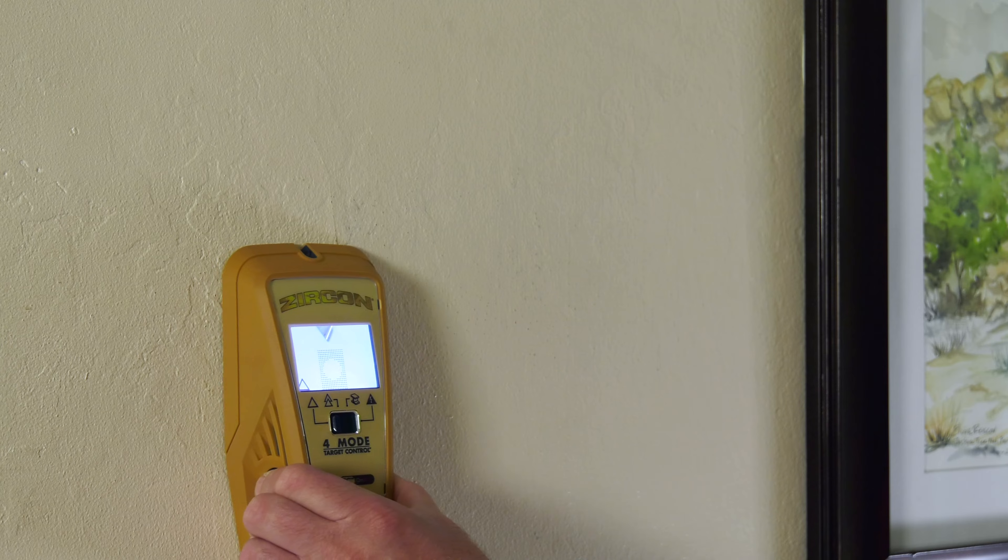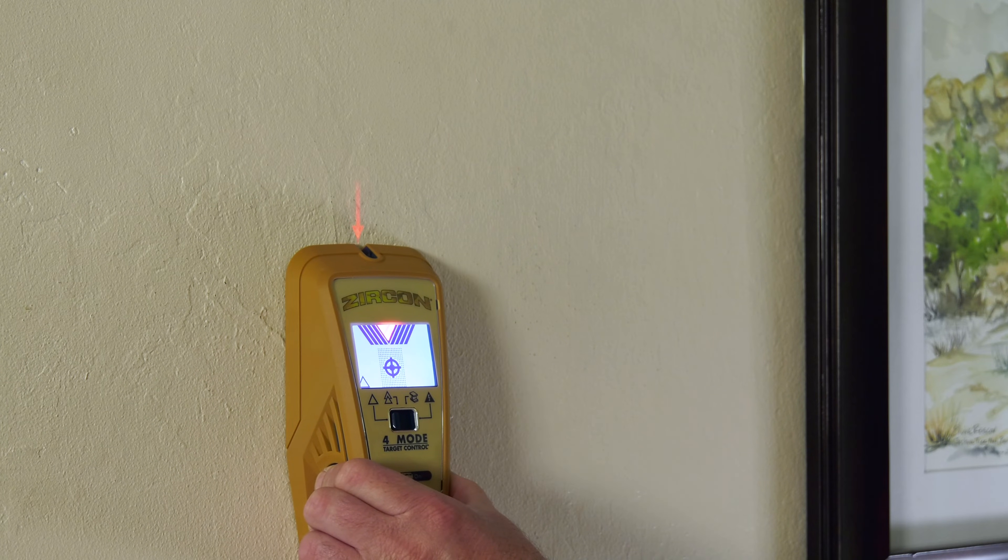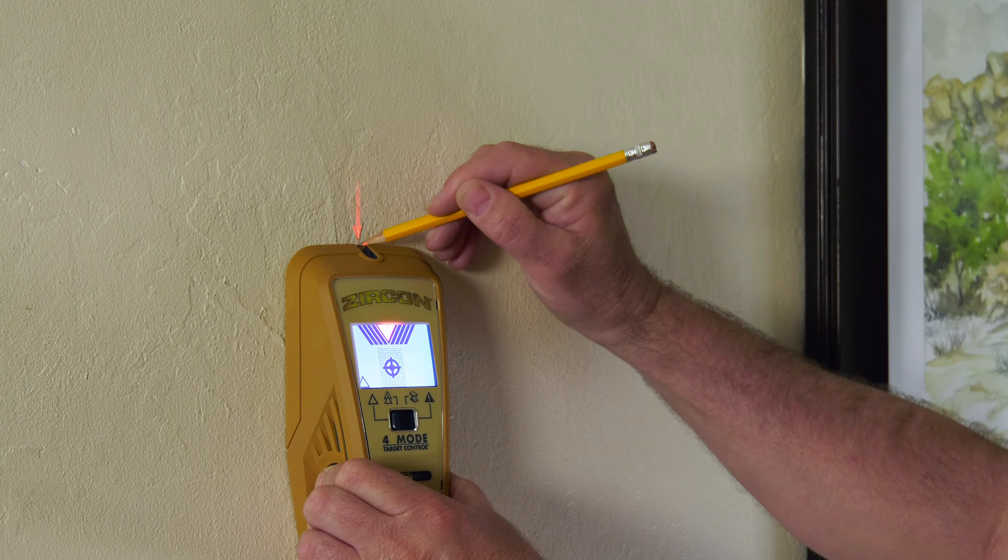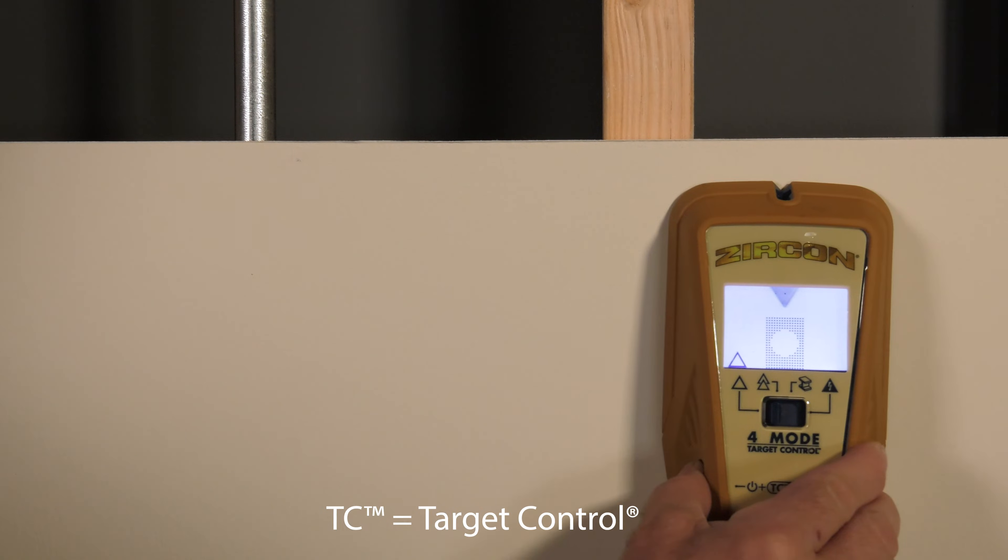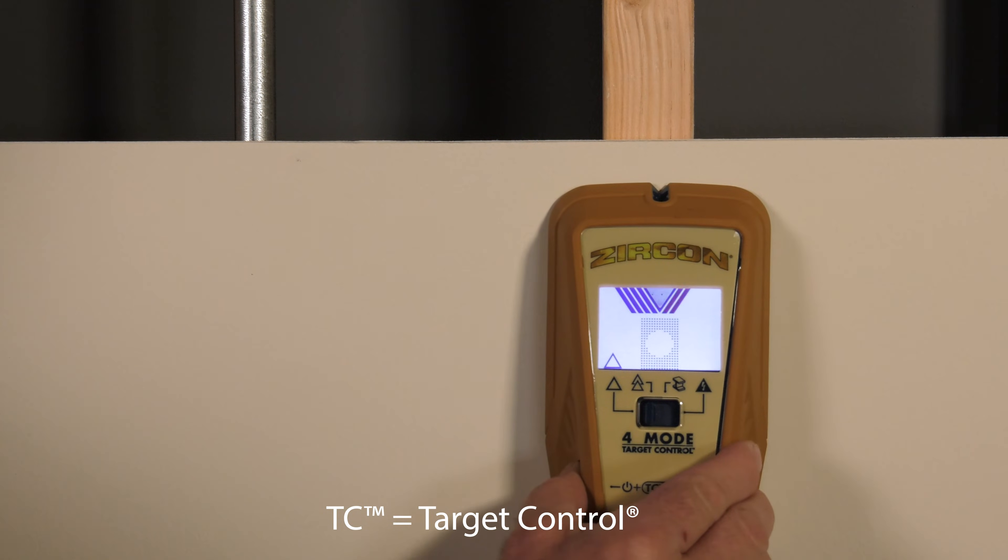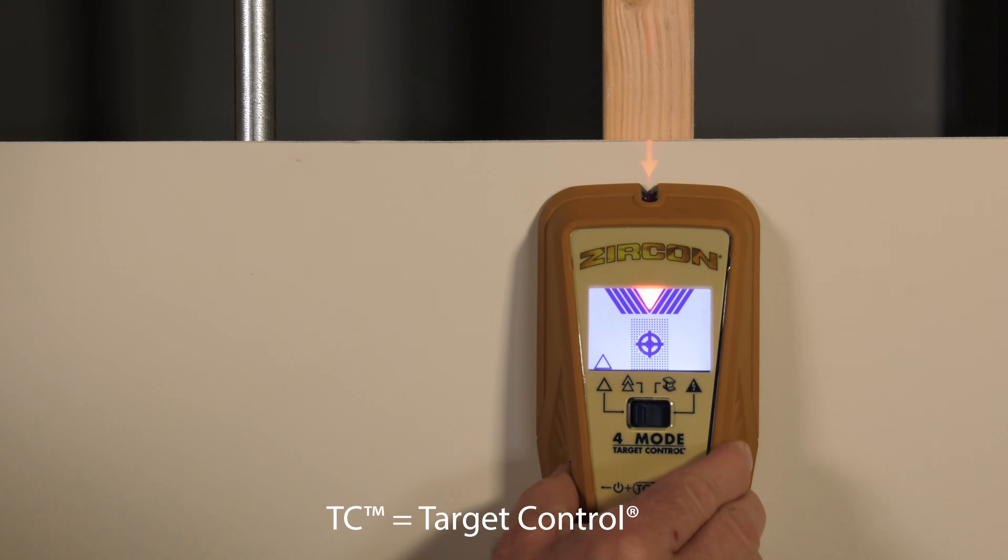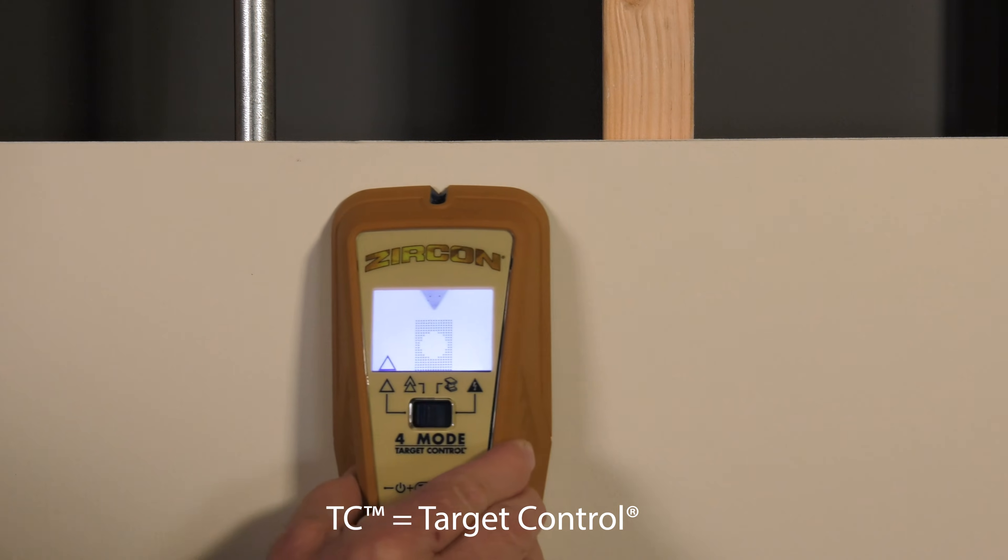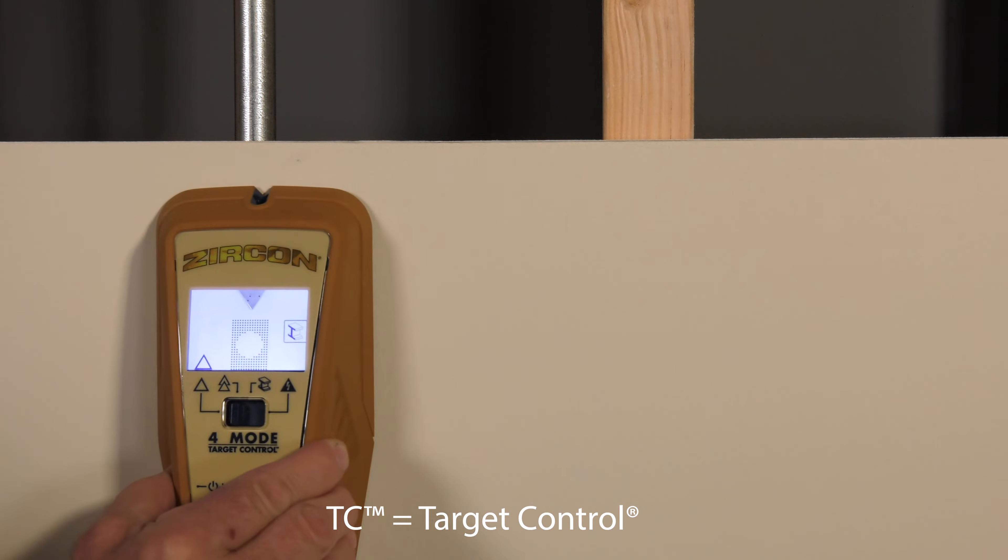The Zircon SuperScan K4 Advanced Wall Scanner features all new target control technology. TC is tuned to find wood studs and not metal, so you can avoid dangerous obstacles like pipes, wires, and other metallic objects, the bane of ordinary stud finders.